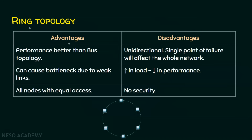Ring topology has better performance than bus topology because it is in a closed loop. However, if there is a weak link, it causes a bottleneck in the network. All nodes have equal access, which is considered one of the advantages. On the disadvantage side, the communication is unidirectional — if a nearby node wants to send data to an adjacent node on the other side, it must still cross many intermediate nodes to reach the destination.